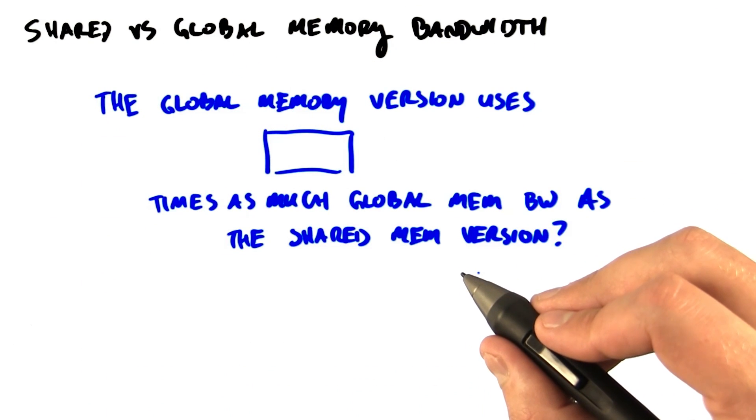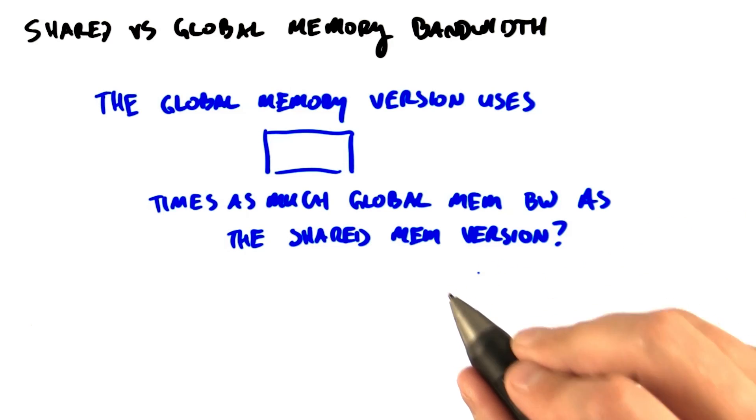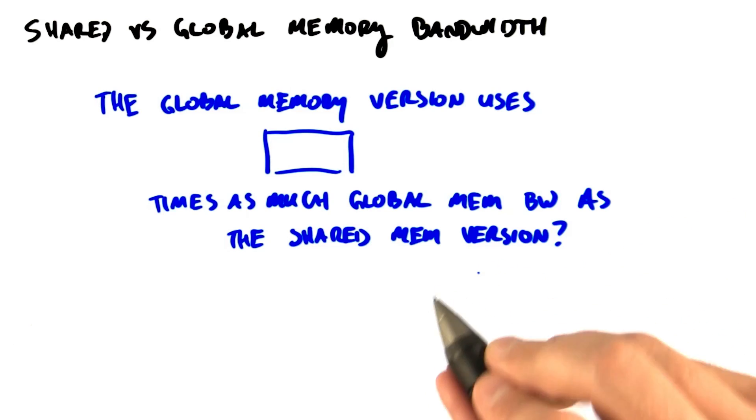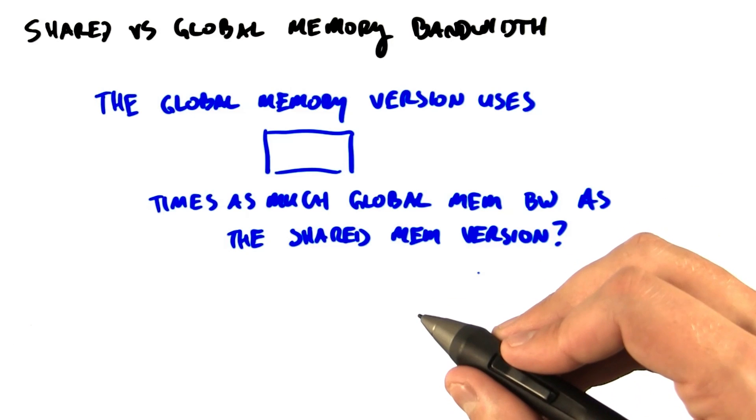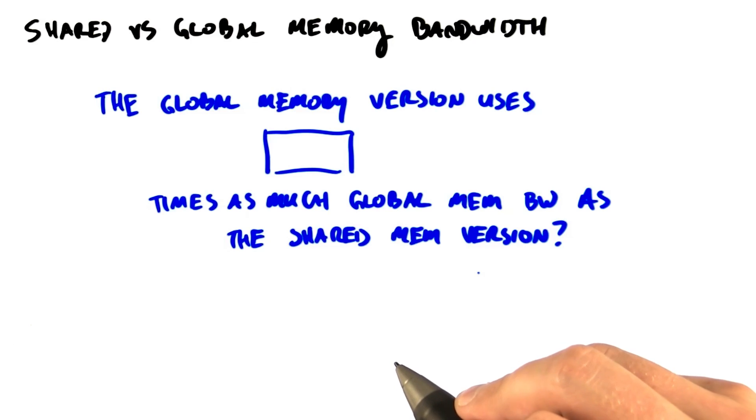The advantage of the shared memory version is that it saves global memory bandwidth. It's a good exercise to figure out how much memory bandwidth you'll save, so I'll ask that as a quiz. The global memory version uses how many times as much memory bandwidth as the shared memory version? Round to the nearest integer.